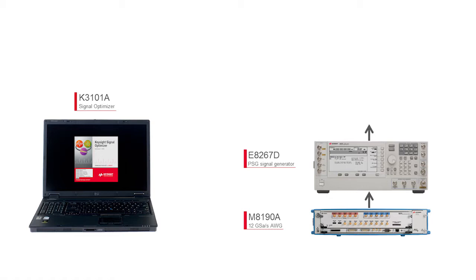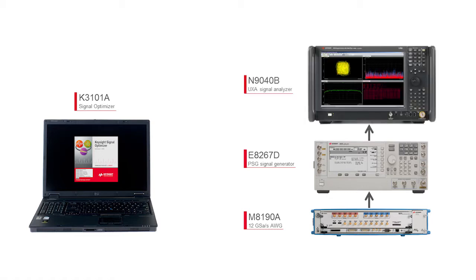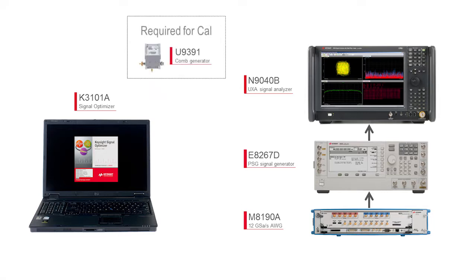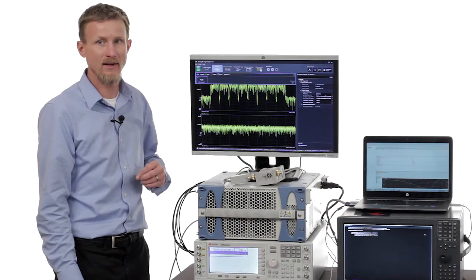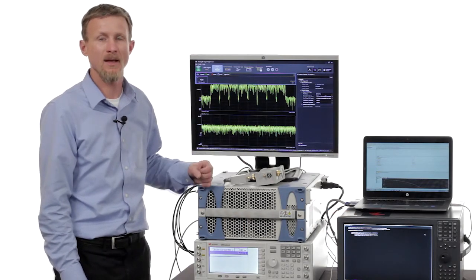This is connected to a signal analyzer, the UXA, which has 1 gigahertz of bandwidth. We'll use that to digitize the signal and then make measurements. Also, we have a comb generator — this is what enables us to do the calibration. This generates an extremely wide bandwidth comb signal, all the way up to 67 gigahertz. We know the exact amplitude and phase of each of those CW signals coming out of the comb generator, and that's what enables us to do the initial calibration on the receive part of the test setup. Then we'll do a calibration of the source side as a second step.